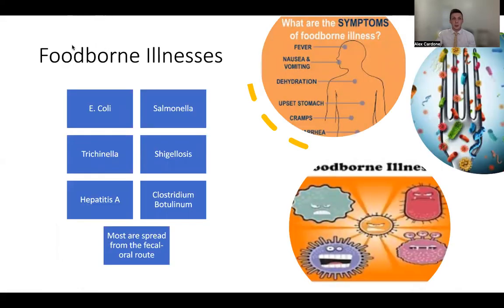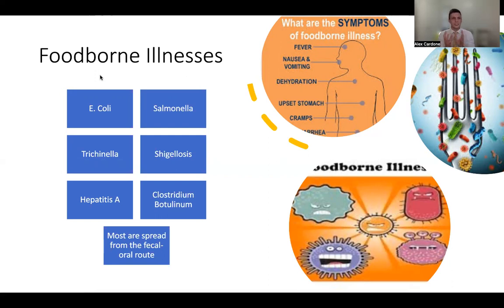First we're going to be going over food-borne illnesses. For this class, we're going to be going over six specific food-borne illnesses. The important thing to understand is that these are illnesses brought about by some sort of microorganism found within the food itself. A lot of the symptoms are going to be almost the exact same, but be sure to pick up on those very specific differences. One of the biggest things with food-borne illness of almost any variety is that they almost always follow the fecal-oral route.